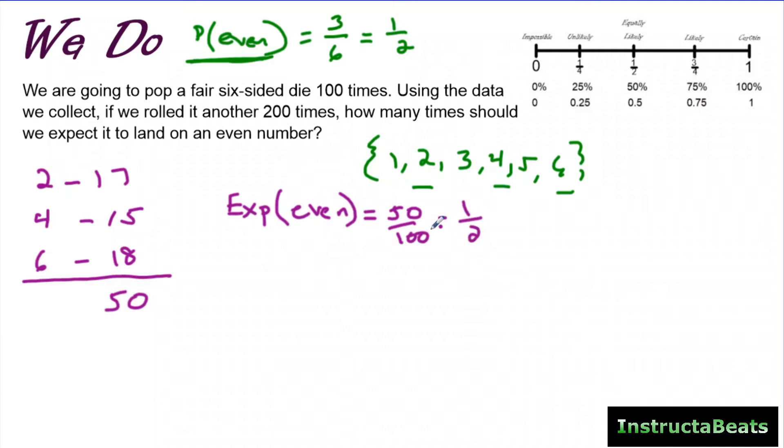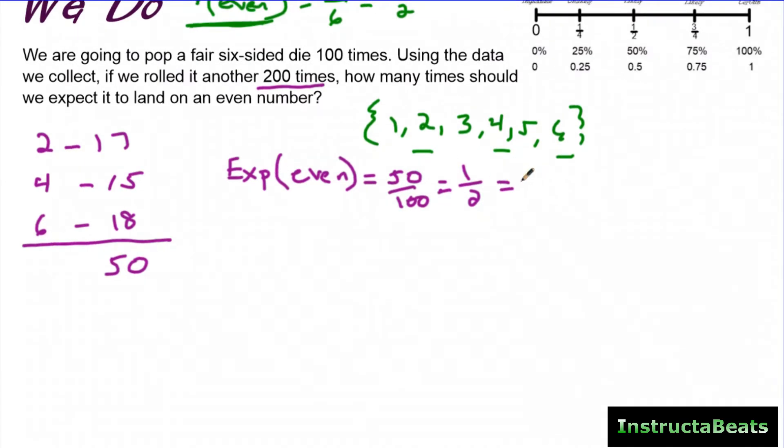So our experimental probability for landing on an even number after we did it 100 times was 50 out of 100. That's actually exactly what our theoretical probability had. So we don't need to change it, and that amazes me because when I was adding them up, I forgot that it was exactly perfect. So now our new experimental probability is 1 half. If we rolled it another 200 times, how many times would we expect it to land on an even number? So we're going to use a little bit of math right here because 50% of the time it landed on an even number. So we're going to use a proportion to actually help us solve this. If we're expecting it based on our experimental probability to land on it 50%, 50 out of 100, and then we're going to roll a total of 200 times, what is the amount of times it would land on even?